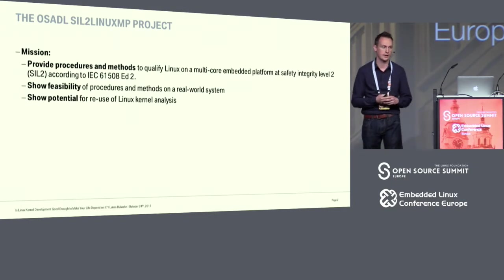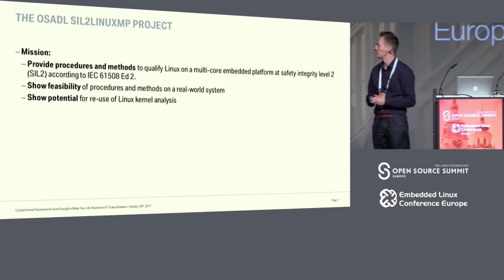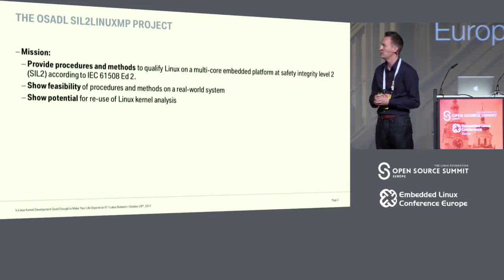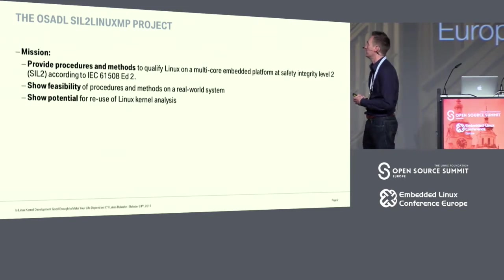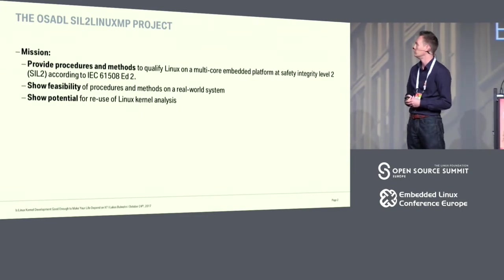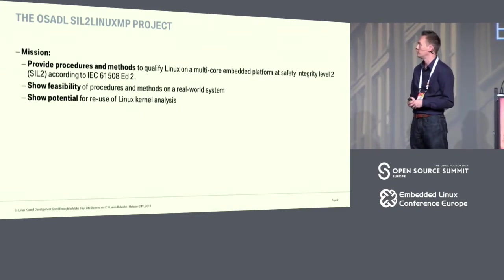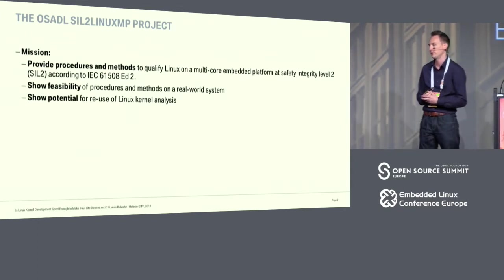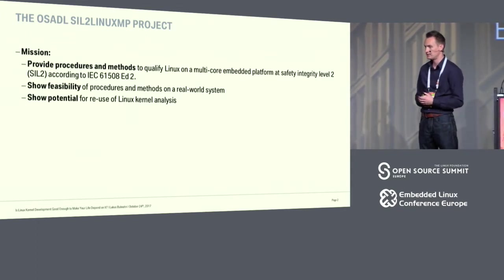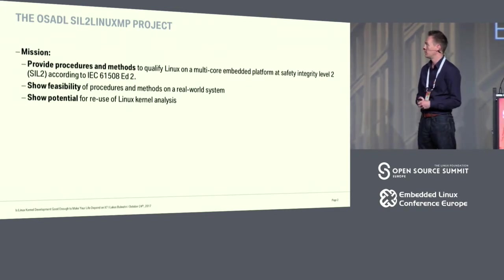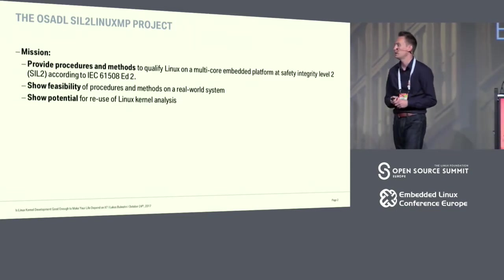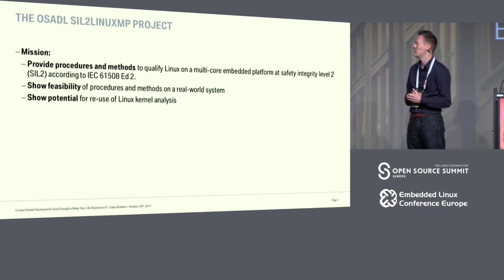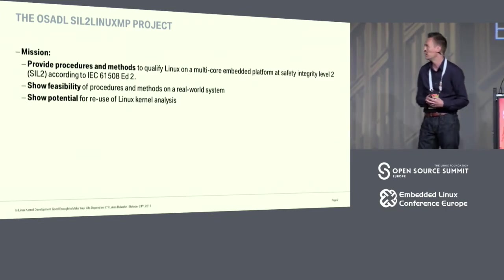This led to the OSADL SIL2 Linux MP project. Its mission is to provide the procedures and methods to qualify Linux on a multi-core embedded platform for safety integrity level 2, according to IEC 61508 edition 2. We want to show that these procedures and methods are not just toy things — we want to show this is feasible to apply in a real world system, and that there is potential for reusing the Linux kernel analysis in later products.